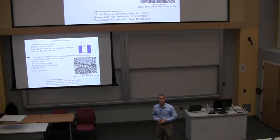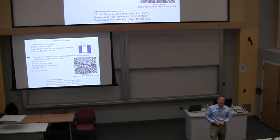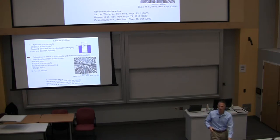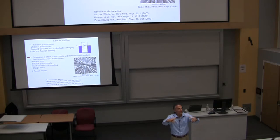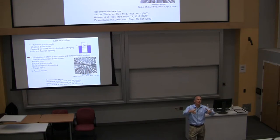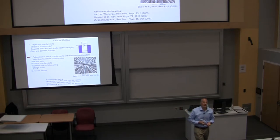The two numbers to take away are: charging energy — the cost to add an electron to the dot, about 5–10 milli-eV — and the particle-in-a-box orbital energy, which is the spacing between discrete electron states and depends on how small the box is. For typical device sizes made in the lab today, orbital energy scales can be a few milli-eV. Those are the two main energy scales, and then the Zeeman energy is a smaller perturbation on top of those.